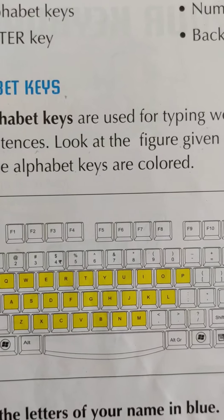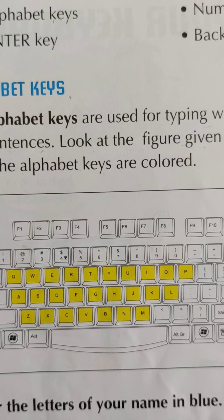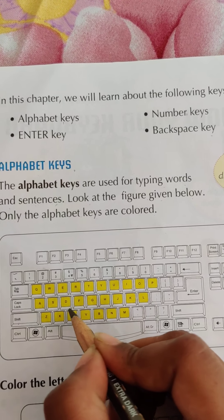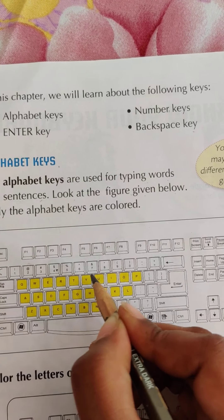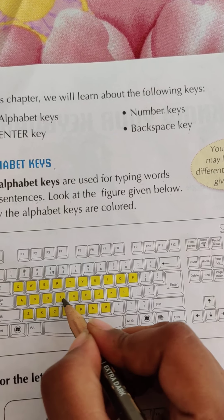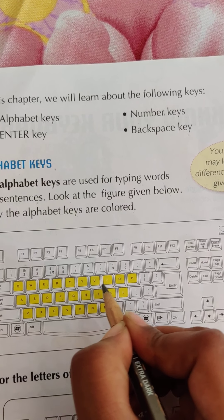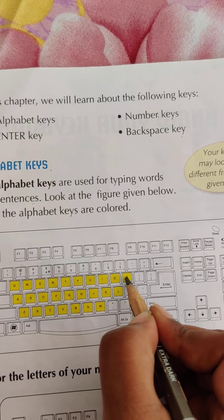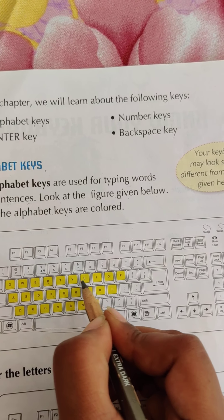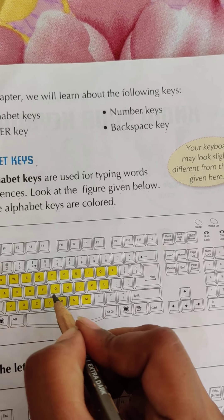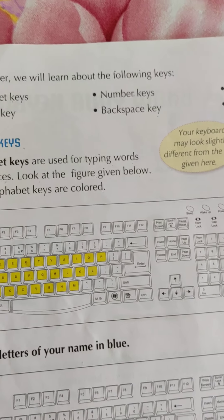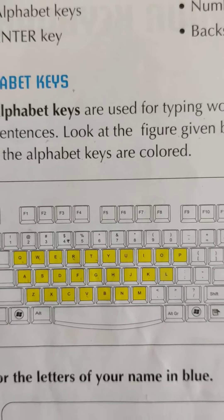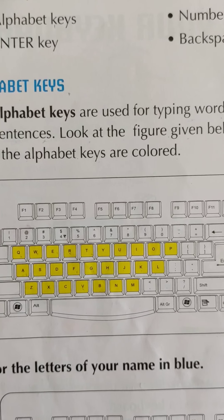Look at the figure. This is the alphabet key. Where is A? Then B, C, D, E. Where is F? This is F. Then G, H, I, J, K, L, M, N, O, P, Q, R, S, T, U, V, W, X, Y, Z. This is the alphabet key — used for writing.